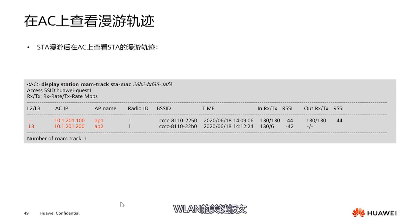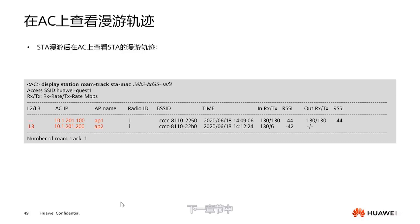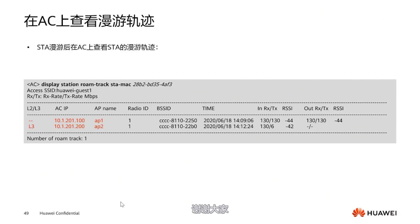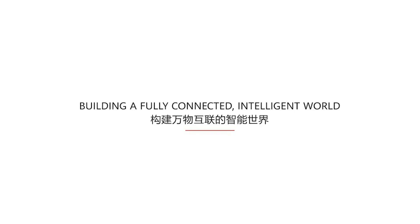In this chapter, we mainly introduced the establishment of the CAPWAP tunnel, key messages of WLAN, the online process of STA, and how to achieve WLAN user roaming. In the next chapter, I will explain the Wi-Fi 6 technology and product introduction.